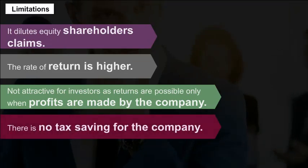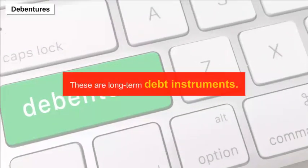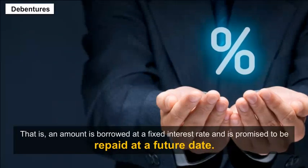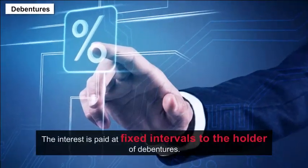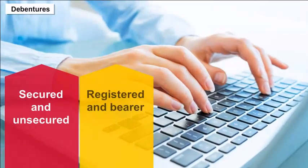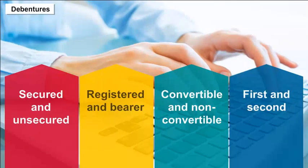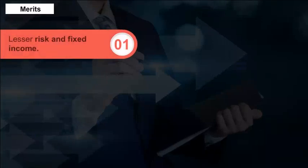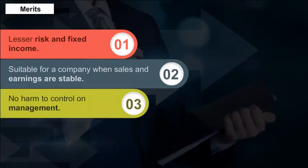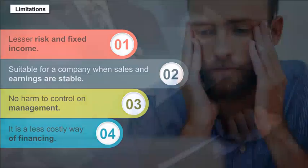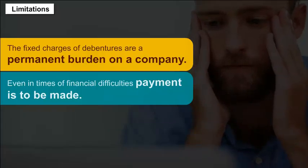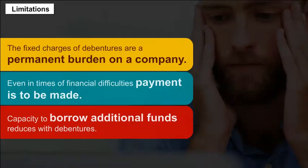Debentures are long-term debt instruments where an amount is borrowed at a fixed interest rate promised to be repaid at a future date, with interest paid at fixed intervals. Types include secured and unsecured, registered and bearer, convertible and non-convertible, first and second. Merits: lesser risk, fixed income, suitable when sales and earnings are stable, no harm to management control, less costly financing. Limitations: fixed charges are a permanent burden, payment required even during financial difficulties, and capacity to borrow additional funds reduces.